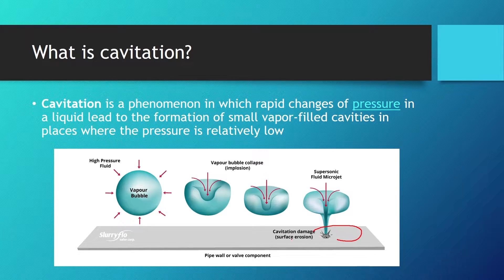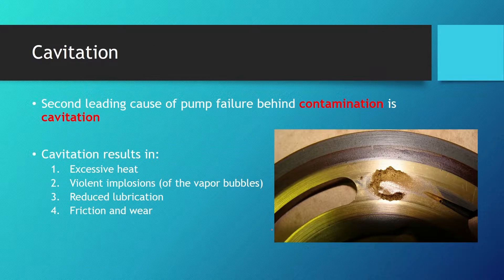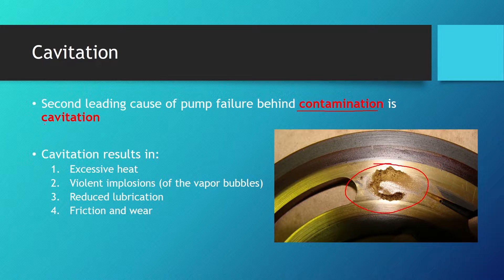Cavitation damage results in surface erosion. This does not happen with one bubble imploding — cavitation is something that happens over time. These microjets start to crack the surface, and within a year of using a pump that has cavitation bubbles you can see the damage on the components. We can see cavitation damage on an axial piston pump in this picture. The first reason for pump failure is contamination, but the second leading cause is actually cavitation.